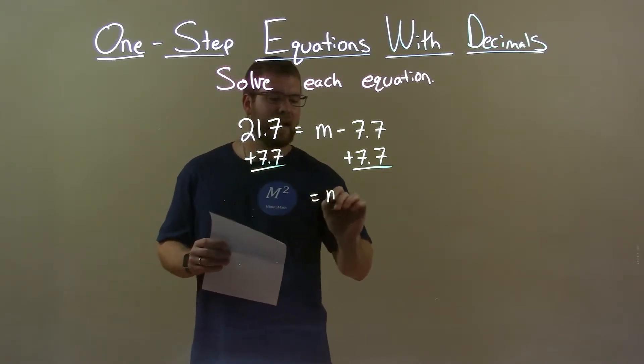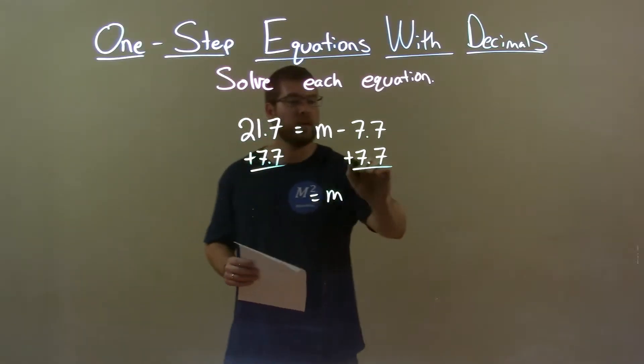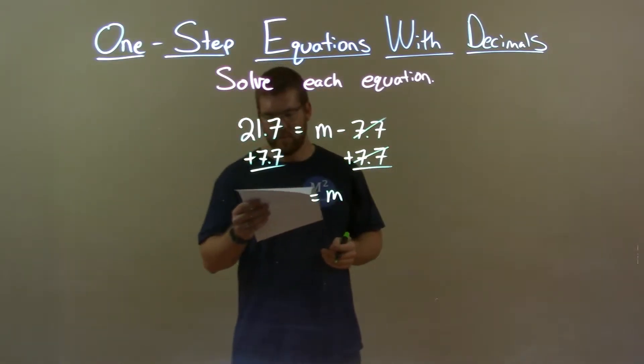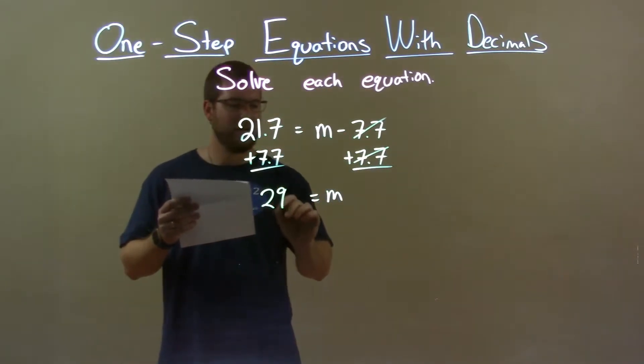This gives me m by itself on the right because the 7.7s cancel. On the left, 21.7 plus 7.7 is 29.4.